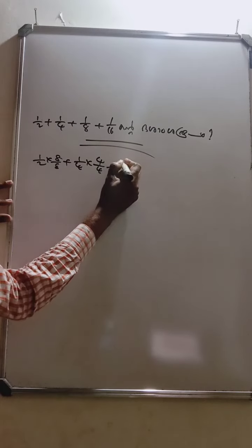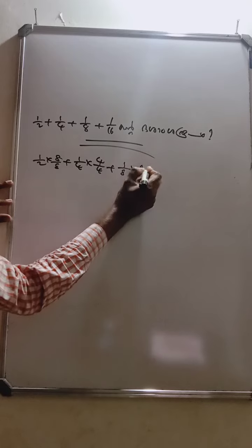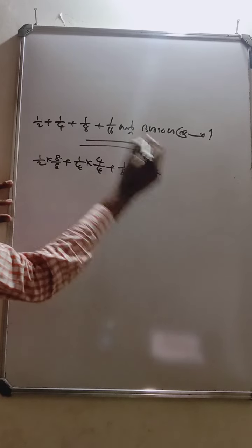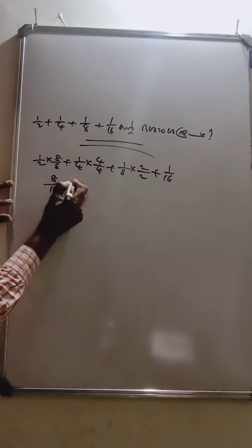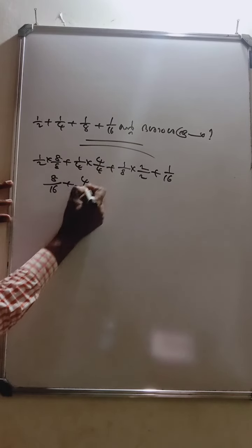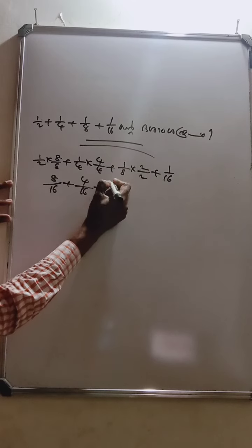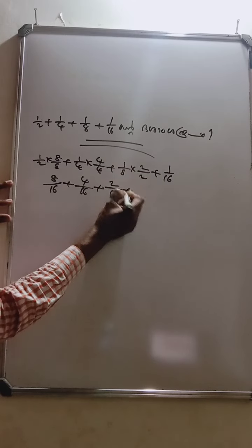1 by 8 into 2 by 2 plus, this is one of them. 1 by 8 is 16 plus, 1 by 8 is 16 plus, 1 by 8 is 16 plus, 2 by 8 is 16 plus, 1 by 8 is 16.